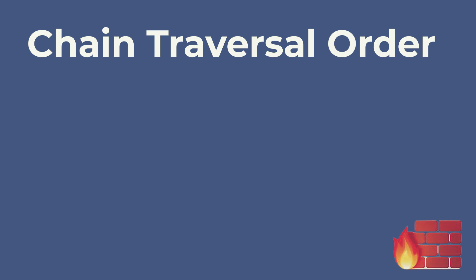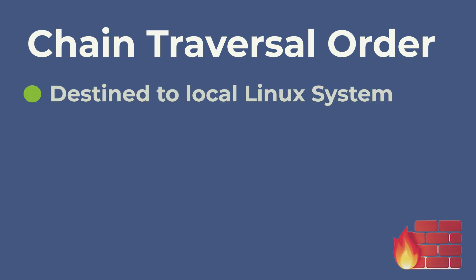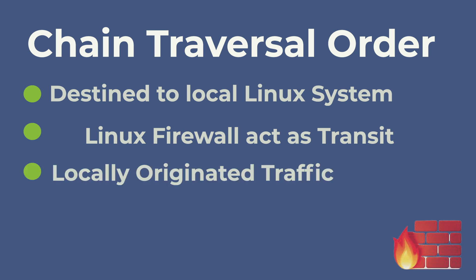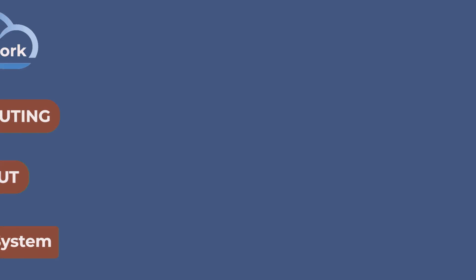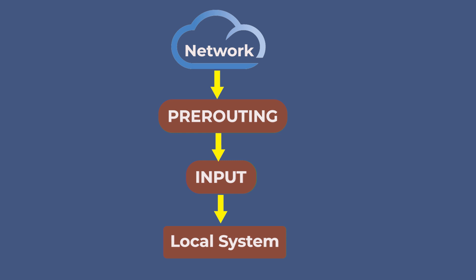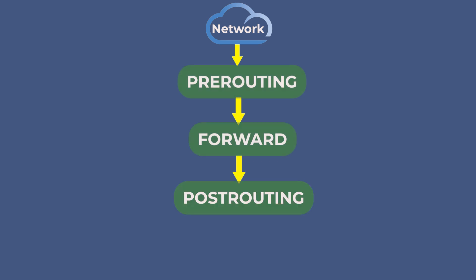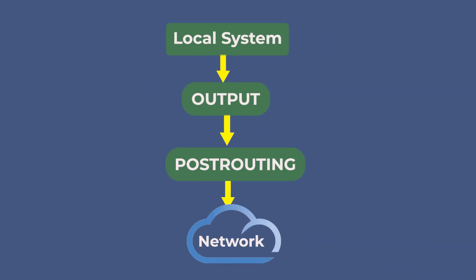We'll consider all the possible scenarios. First, we'll look at traffic destined to the local system. Then we'll look at the Linux firewall acting as a transit. And finally, we'll see how IP traffic originating from the local system works. If a packet is inbound to a Linux system, it will go through the PREROUTING chain, then check the routing table, and if the packet is destined to the local system, it goes to the INPUT chain, and finally the packet hits the local system. If the packet arrives from a remote host and passes through the system — where the Linux firewall acts as a transit — it will go through PREROUTING, then FORWARD, and finally POSTROUTING before the packet leaves the system. For a packet that originates from the local system, it will go through the OUTPUT chain and then POSTROUTING before it leaves the system.